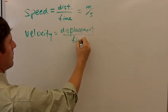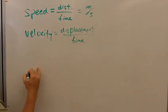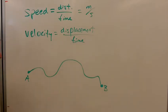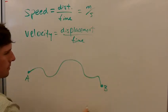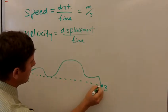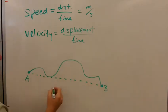Well, imagine an object starts here at point A and it moves like this and gets to point B. The distance that it covers would be the sum of all of these meters along this path, whereas the displacement would be as the crow flies or in a straight line.